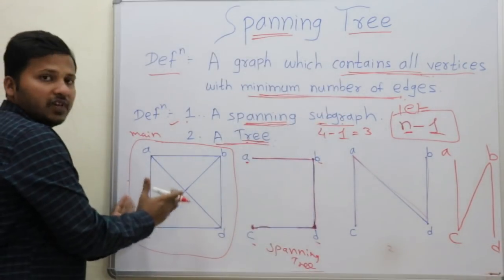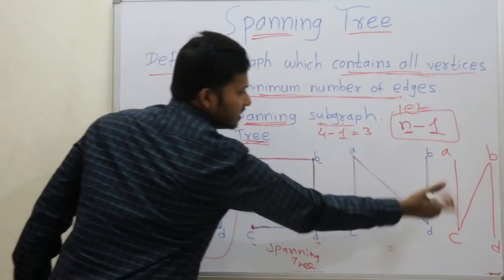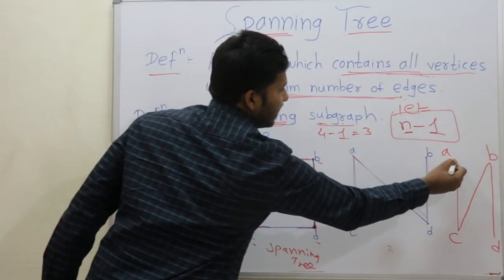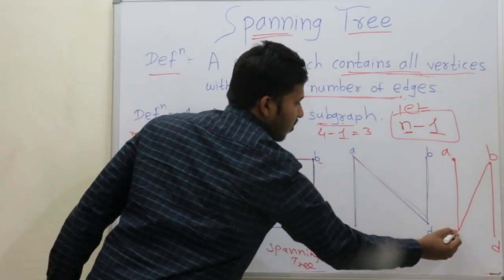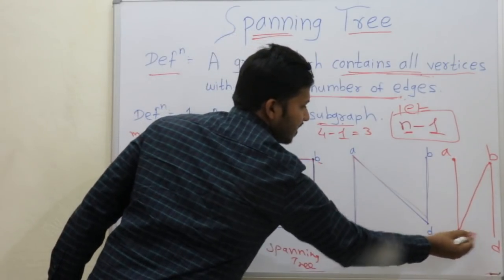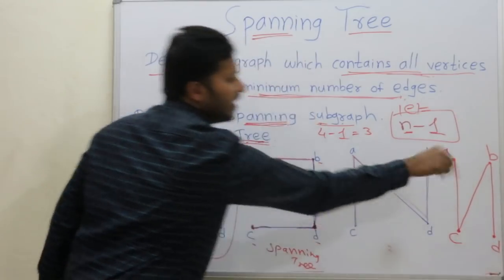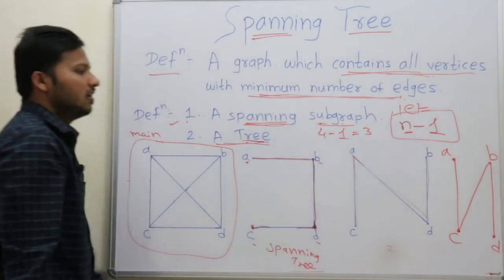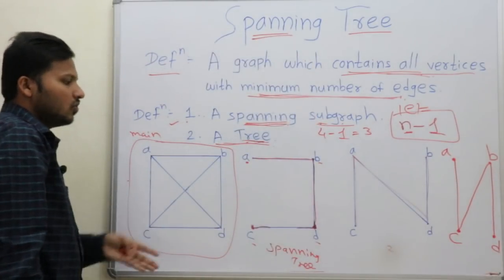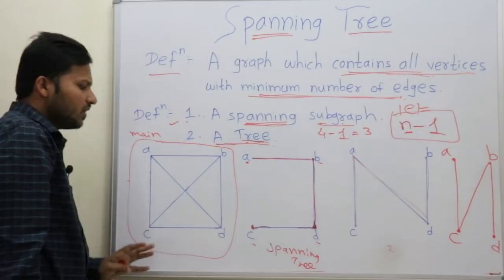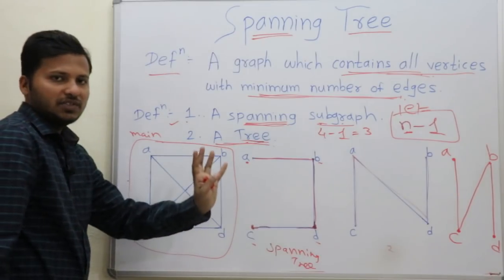From this graph we have formed another spanning tree by taking all 4 vertices and 3 edges. They are different edges, so in this way there can be many spanning trees.